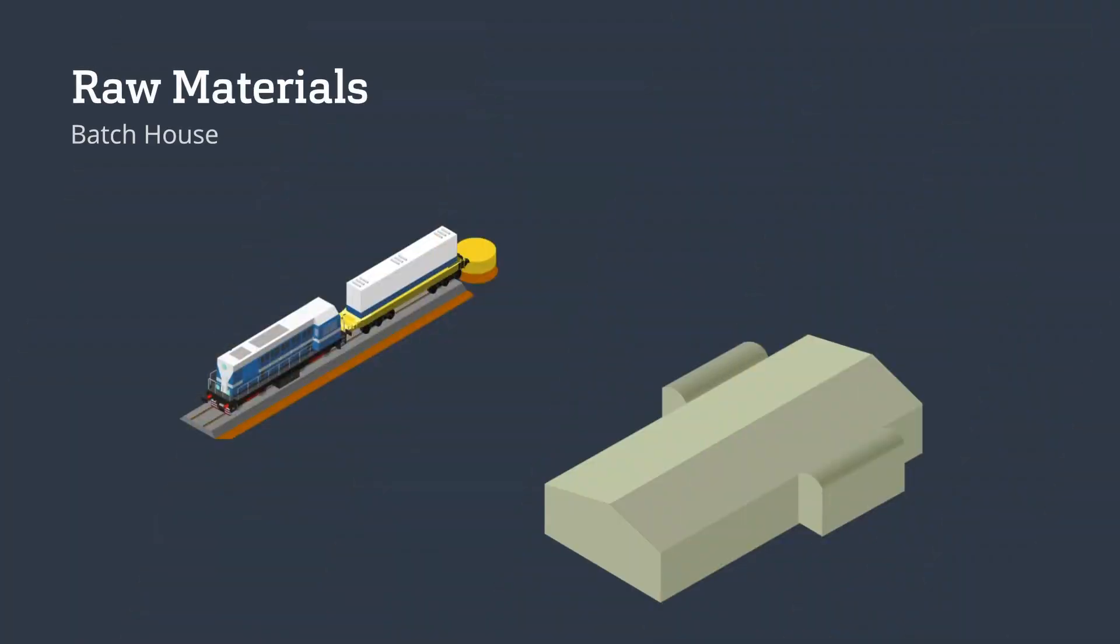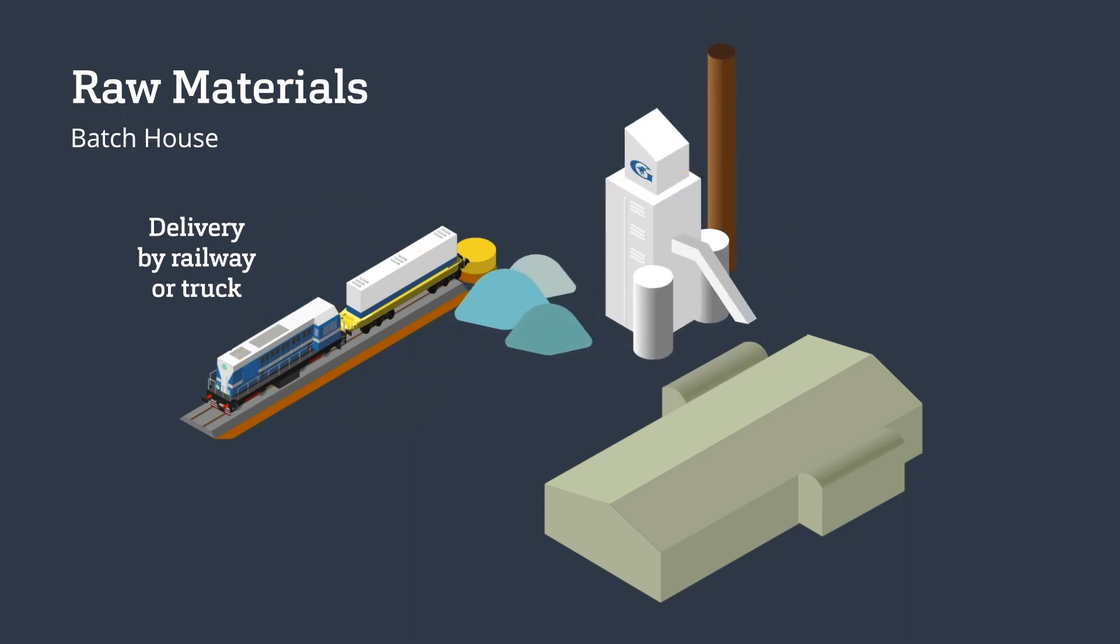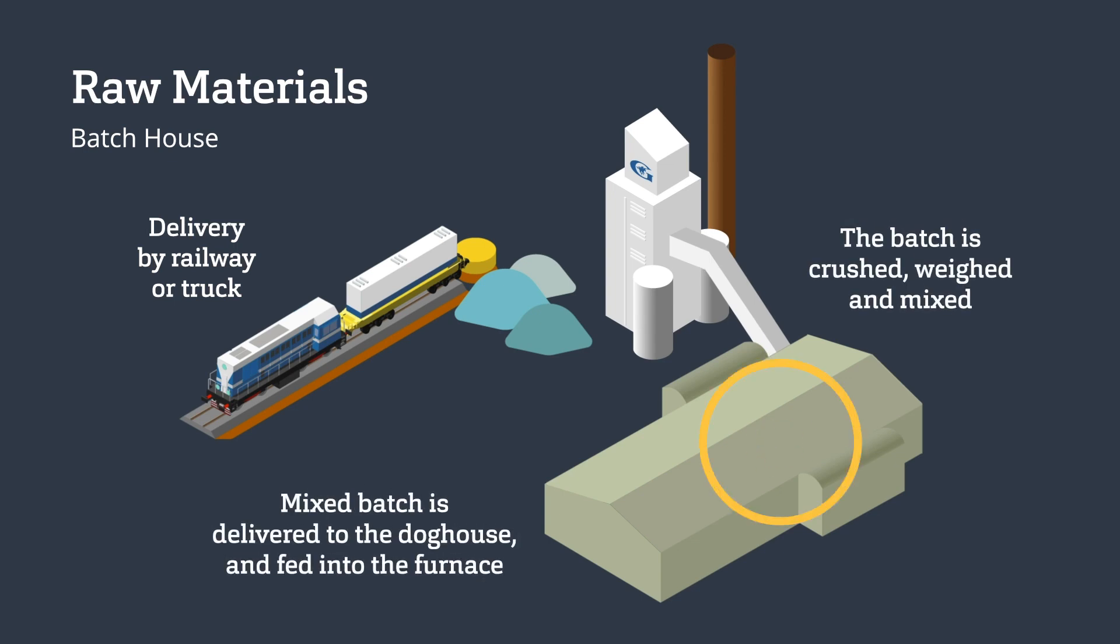The float glass process begins with the delivery of raw materials by truck or rail to the plant batch house. Once fully mixed, the batch material is continuously fed into a large chute which resembles the shape of an inverted doghouse.